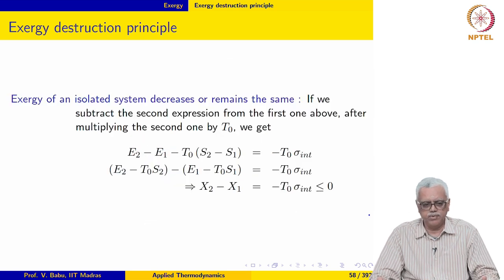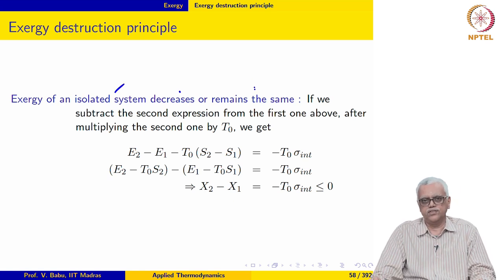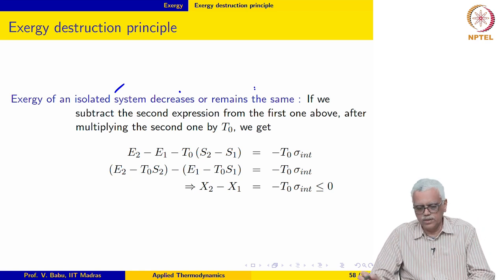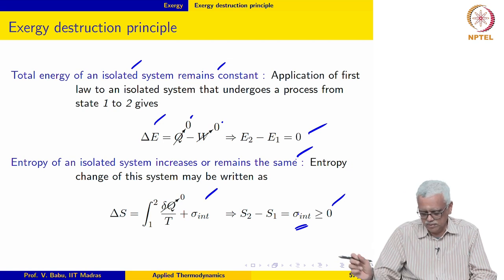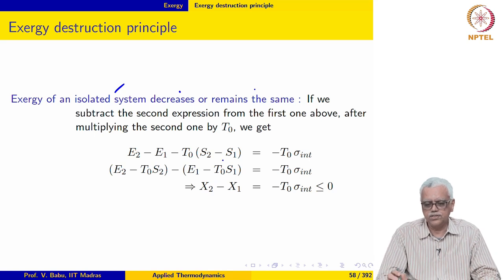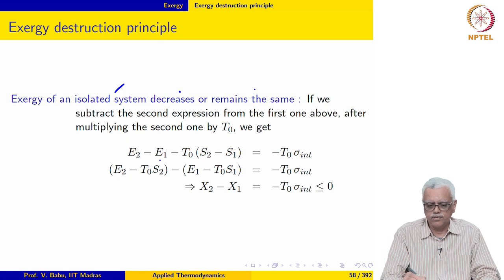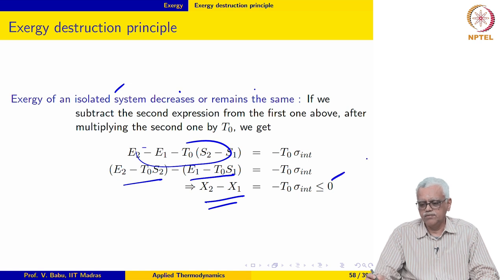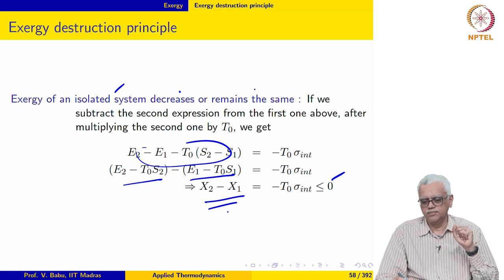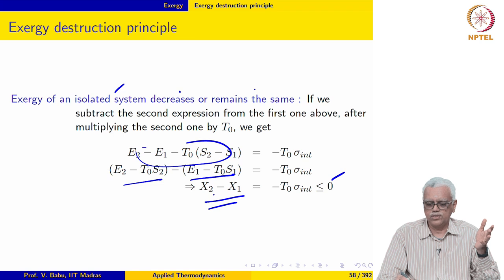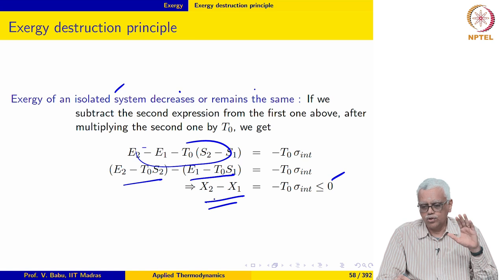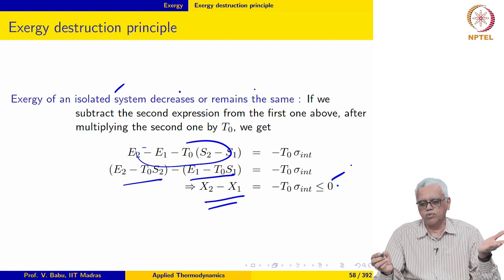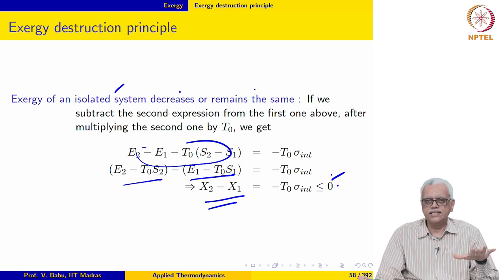We may make a similar statement regarding exergy: exergy of an isolated system decreases or remains the same. We multiply the entropy expression by T naught and subtract it from the energy expression to get E2 minus E1 minus T0 times (S2 minus S1) equals minus T0 times sigma internal. Rearranging, X2 minus X1 equals minus T0 times sigma internal, which is less than or equal to 0. So X2 is either less than X1 or, if the process is reversible, equal to X1.